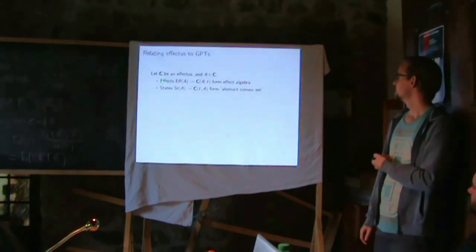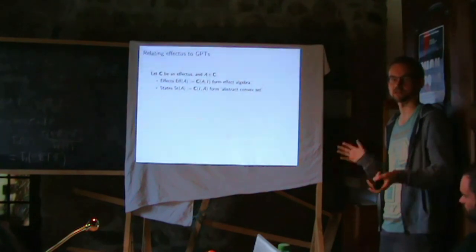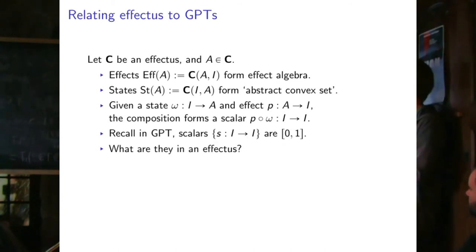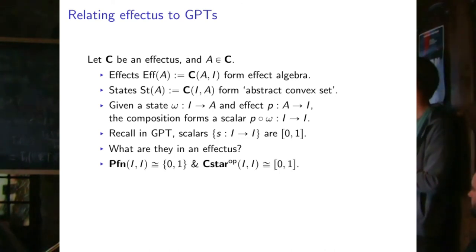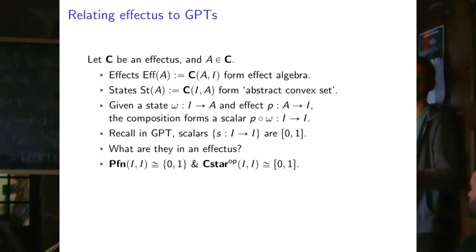In an effectus, effects form an effect algebra by definition. The states — morphisms from I to A — form something called an abstract convex set. Given states and effects I can compose them and get a scalar. In a GPT, these scalars are the real numbers — but what are they in an arbitrary effectus? In partial functions, the scalars are just the Booleans — a deterministic effectus. In C*-algebras, the scalars are the real unit interval and C*-algebras form a GPT. In general, we know scalars form an effect algebra by definition, and they also have a multiplication given by composition, making them an effect monoid — an effect algebra with associative, distributive multiplication.